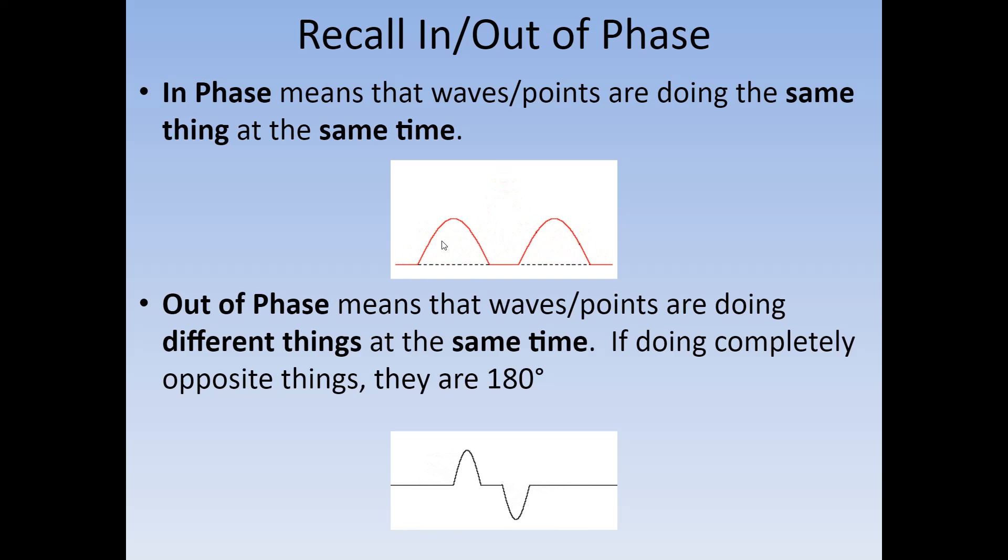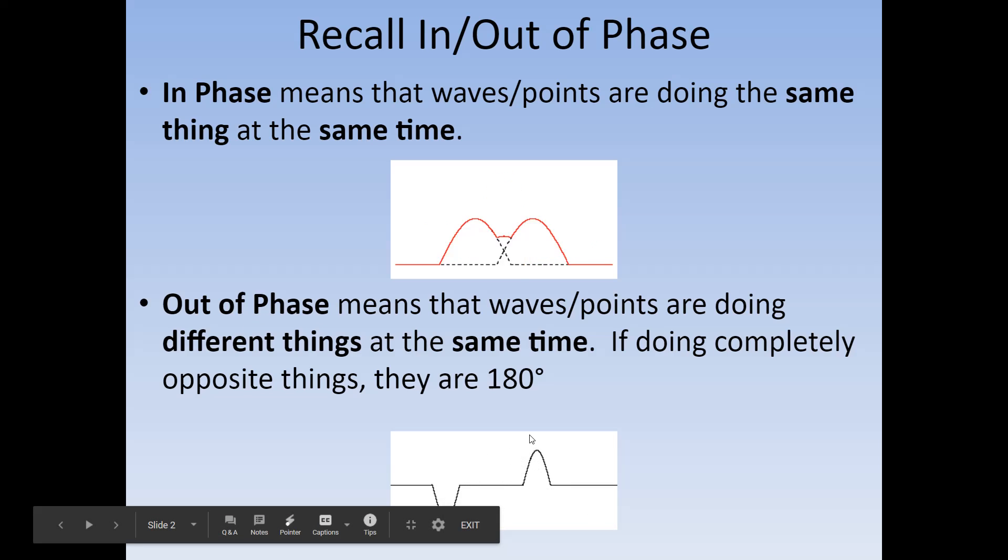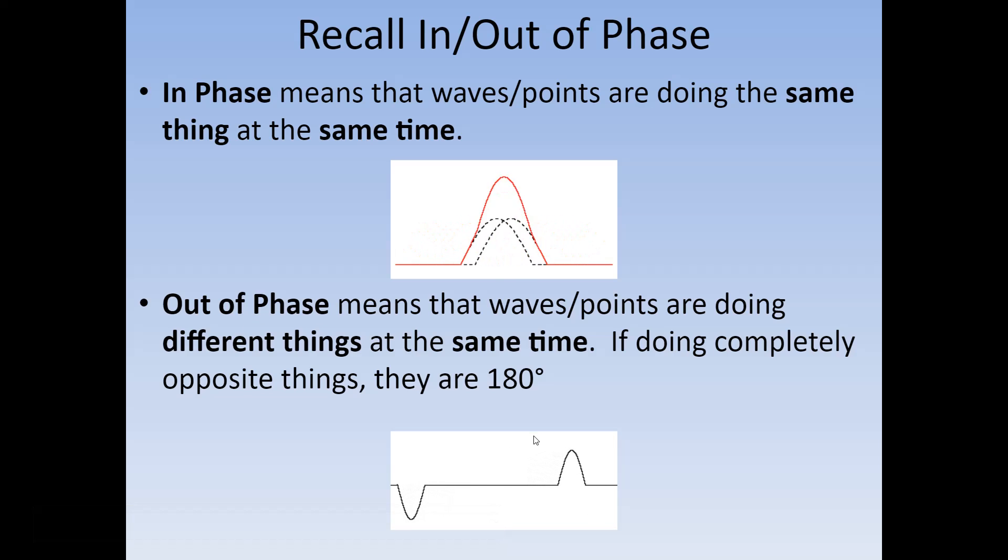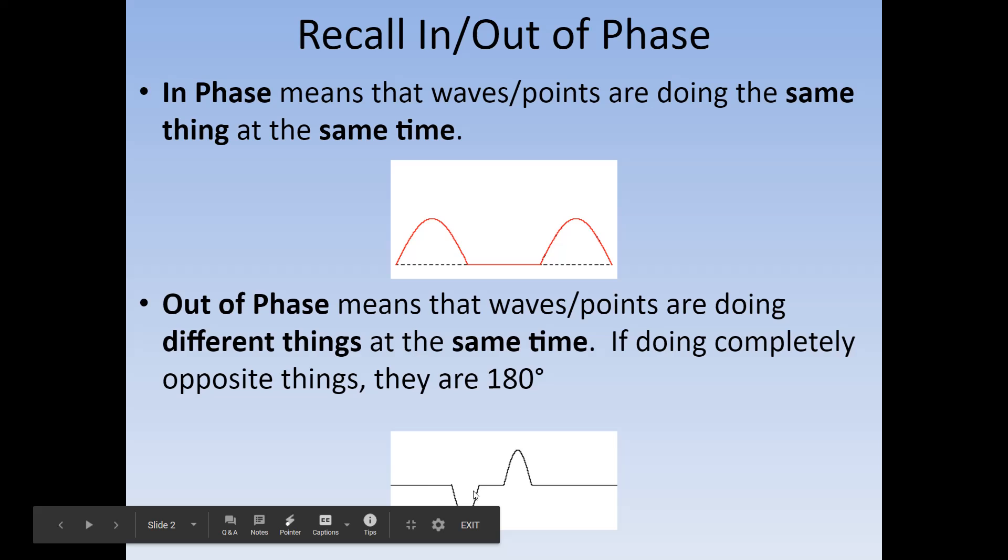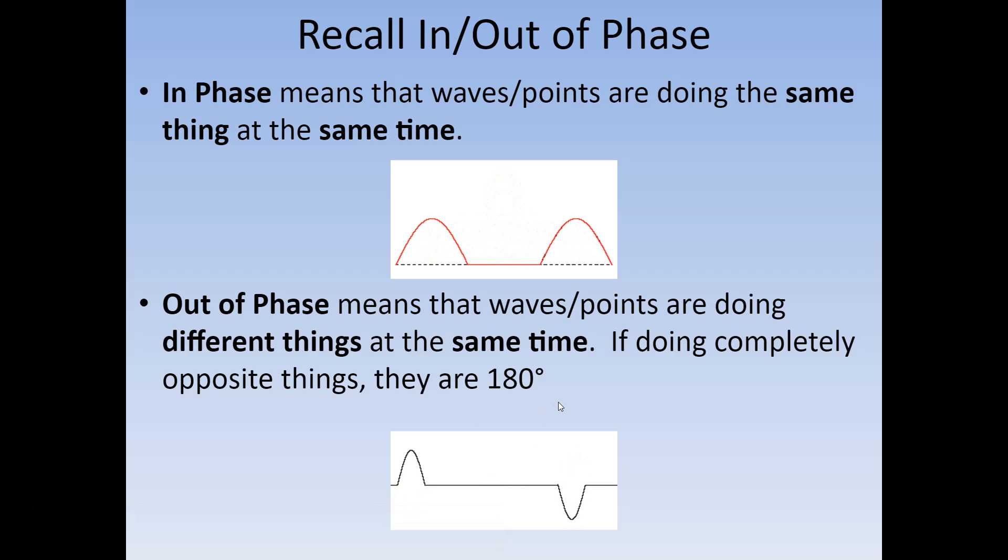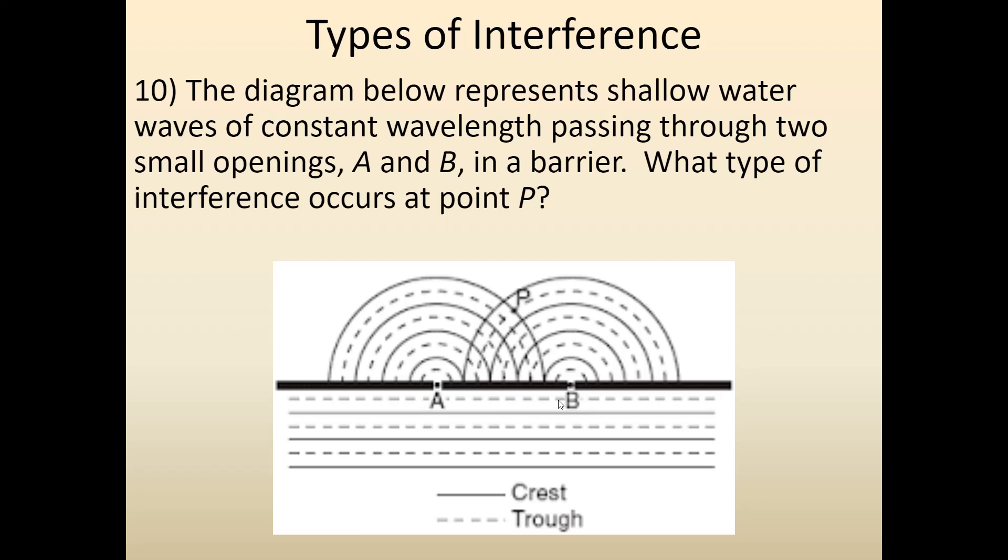When two waves are in phase, they'll combine their amplitudes together, add up, and you get constructive interference. When you have out of phase, they're doing the opposite thing and their amplitudes would end up subtracting, decreasing compared to before. Sometimes when you get completely zero, they'll call that 180 degrees out of phase.